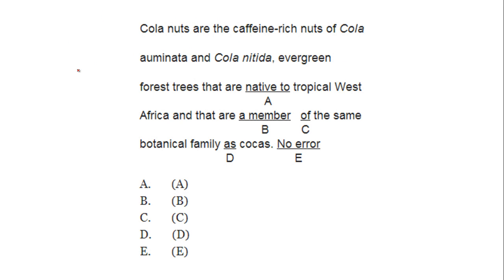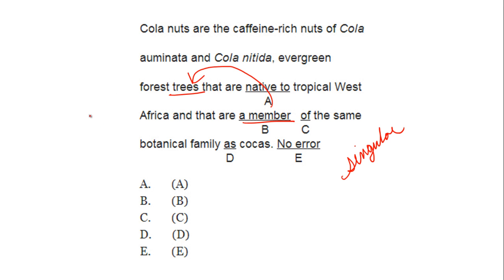'Cola nuts are the caffeine-rich nuts of Cola amanata and Cola nitida, evergreen forest trees that are native to tropical West Africa and that are a member of the same botanical family as cocoas.' I want to bring your attention to 'a member' — is it singular or plural? It is singular. But what does 'a member' refer to? It points back to 'trees,' which is plural.